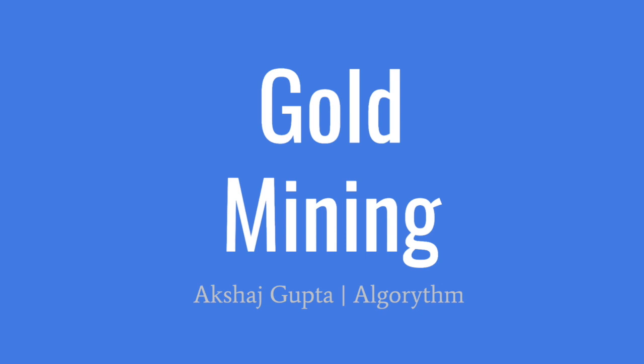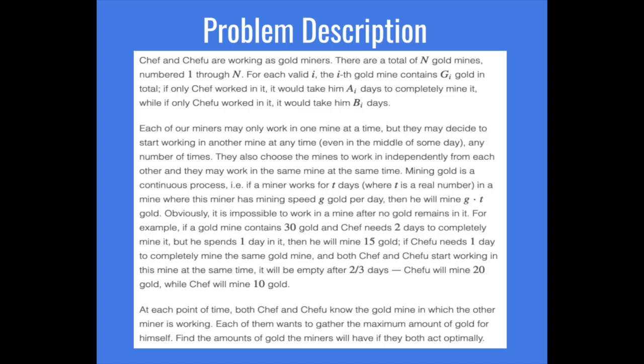Hello, today I'll be going over Gold Mining, problem number four of the June Lunchtime 2020 Division Two from CodeChef. The problem statement is that Chef and Chefu work as gold miners. There are a total of N gold mines numbered one through N, and for each valid mine, the i-th mine contains G[i] gold in total.